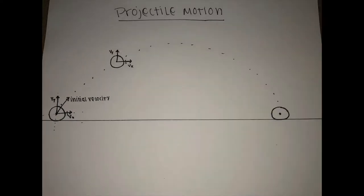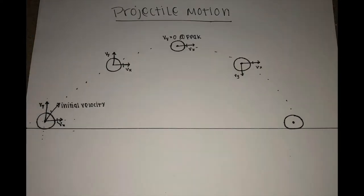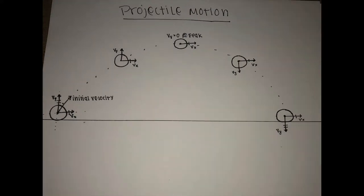As the object travels the projectile motion path, the horizontal velocity remains constant. The vertical velocity decreases as it travels because it is being acted upon by gravity. At the peak of motion, the vertical velocity becomes zero before the object begins to fall back towards the Earth's surface.